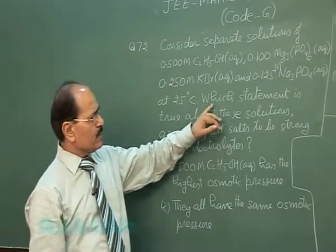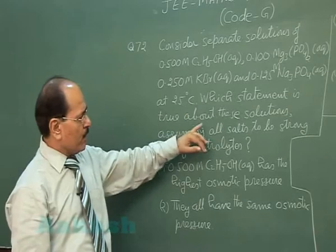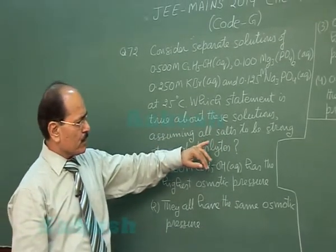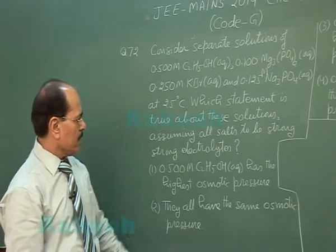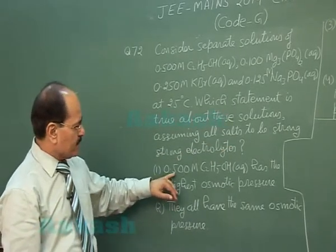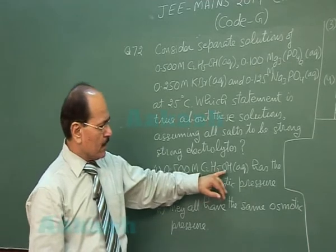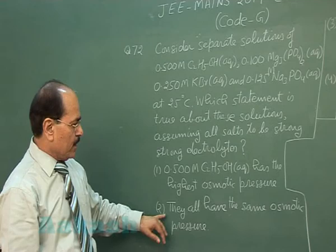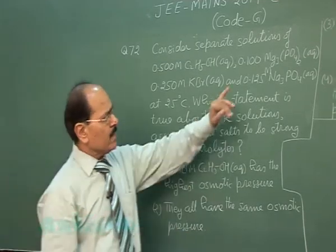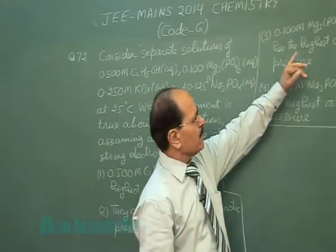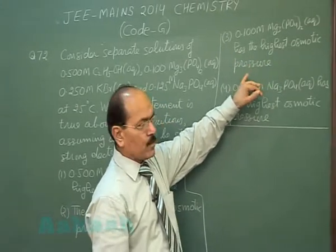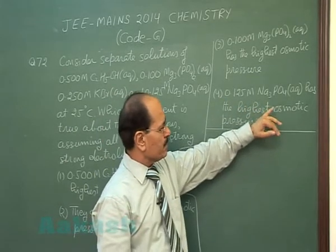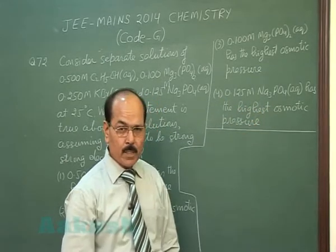The question asks which statement is true about these solutions, assuming all salts to be strong electrolytes. The options are: 0.500 molar ethanol has the highest osmotic pressure; they all have the same osmotic pressure; 0.100 molar magnesium phosphate has the highest osmotic pressure; or 0.125 molar sodium phosphate has the highest osmotic pressure.